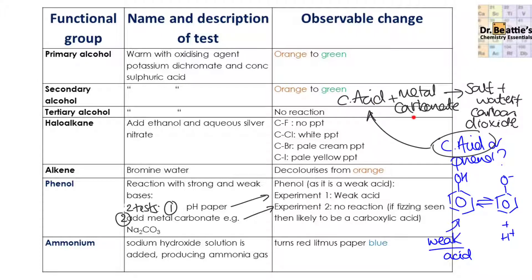Carboxylic acids produce fizzing or effervescence when reacted with a metal carbonate, because they give a salt, water, and carbon dioxide. However, if you add a metal carbonate to a phenol, there's no carbon dioxide or hydrogen produced. So if you are looking for a phenol, you're looking for both results: weak acid when treating with pH paper, and no reaction when treating with metal carbonate.